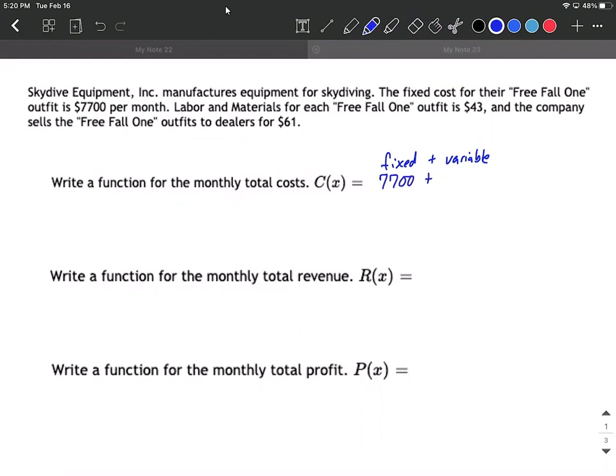Now, the variable cost is going to change depending on how many of these outfits we actually sell. You can see in that next line, labor and materials for each outfit is $43. So for every outfit we sell, it's going to cost us $43 to make the outfit. X is going to represent our number of outfits.